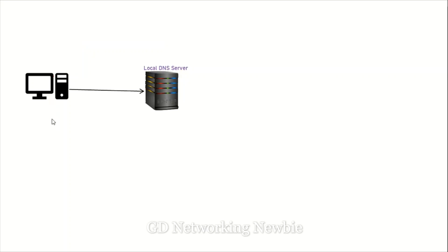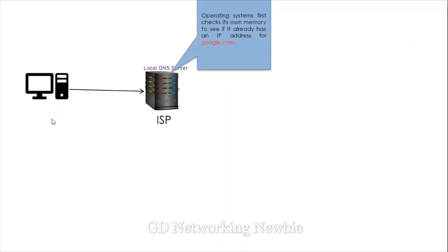But if the cache memory doesn't have an IP address for google.com, then the user sends a request to the local DNS server. That local DNS server is normally provided by the ISP from where you get internet services. The local DNS server receives the query asking whether it has the IP address for google.com. In response, it first checks its own cache memory to see if it already has an IP address for google.com. If it finds it, the local DNS server forwards that IP address back to the user.